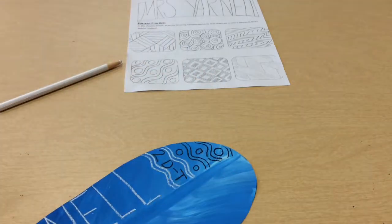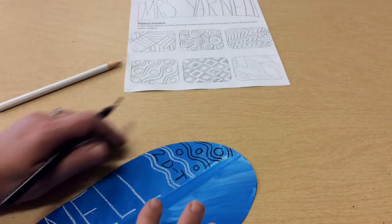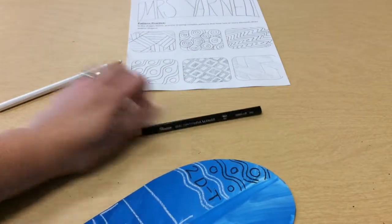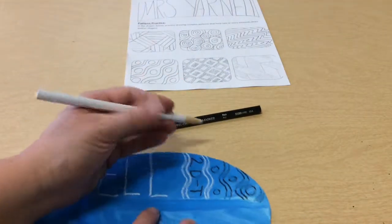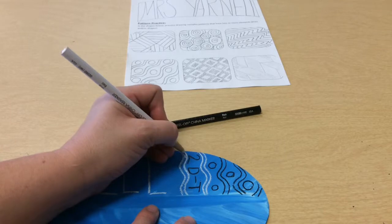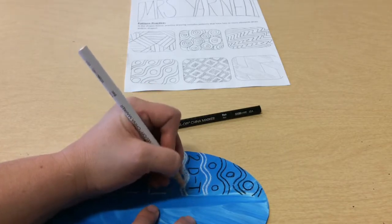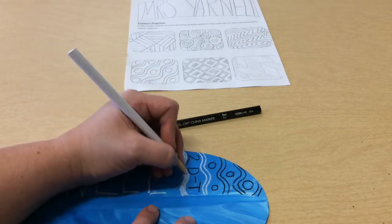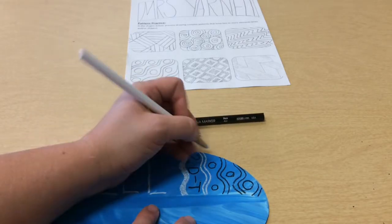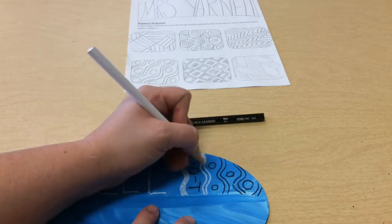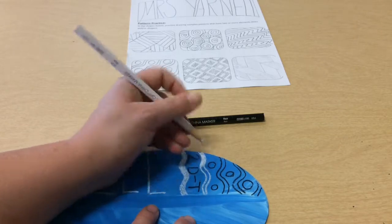You can also think about coloring in some of these shapes. So maybe because I have the white lines here, I'm going to color this line in so it's thick. I'm just taking my time. I'm not pressing really hard, but I want the white to look solid. So I'm going over it a couple of times.